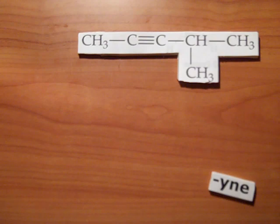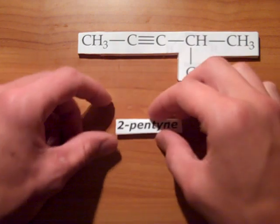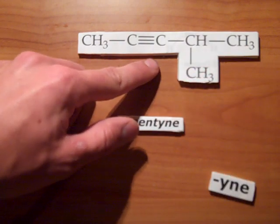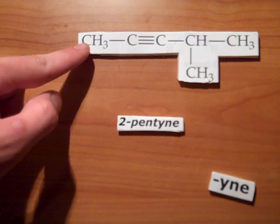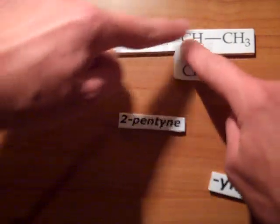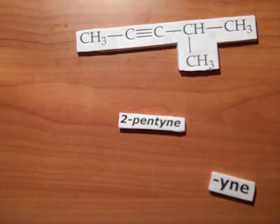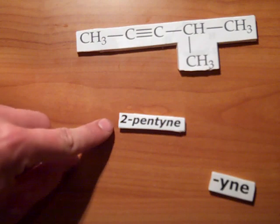And last, identify... Oh, I'm sorry. Just as in alkenes, the prefix number, or the location of the triple bond, should be the lowest. Here it's two. One, two. Location of the triple bond. One, two, three, four, five. Just as in alkenes, the prefix number should be the lowest. Always remember that.